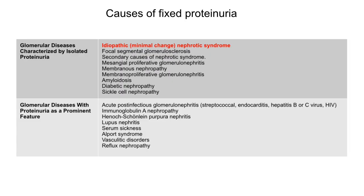Glomerular diseases characterized by isolated proteinuria include minimal change disease, focal segmental glomerulosclerosis, mesangial proliferative glomerulonephritis, membranous nephropathy, membranoproliferative glomerulonephritis, amyloidosis, diabetic nephropathy, and sickle cell nephropathy. Glomerular diseases with proteinuria as a prominent feature include acute post-infectious glomerulonephritis, IgA nephropathy, HSP nephritis, lupus nephritis, serum sickness, Alport syndrome, vasculitic disorders, and reflux nephropathy.